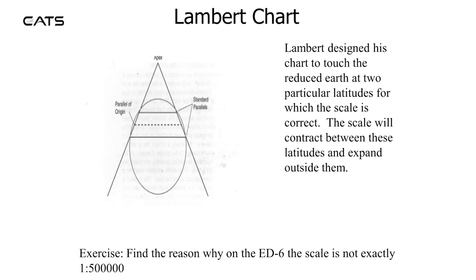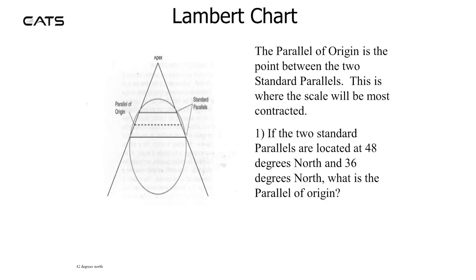The Lambert chart. Lambert designed the chart to touch the reduced earth at two particular latitudes for which the scale is correct. The scale will contract between these latitudes and expand outside them. The parallel of origin is the point between two standard parallels — this is where the scale will be most contracted. If the two standard parallels are located at 48 degrees north and 36 degrees north, the parallel of origin may be calculated by adding the two latitudes together and dividing by two.